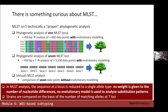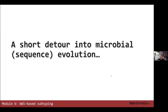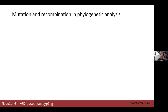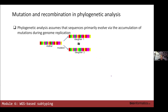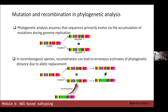So why did MLST become as popular as it was? It requires a bit of a detour into areas covered in earlier lectures, primarily dealing with the concept of mutation and recombination in phylogenetic analysis. Phylogenetic analysis assumes that sequences are evolving via accumulation of mutations. However, in many microbial species, recombination becomes quite prominent — depending on the species, it's almost an art form.